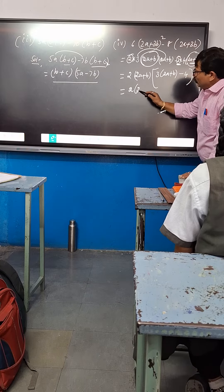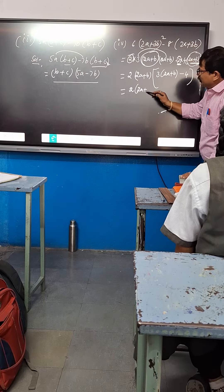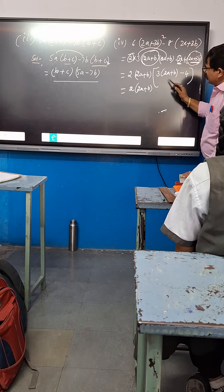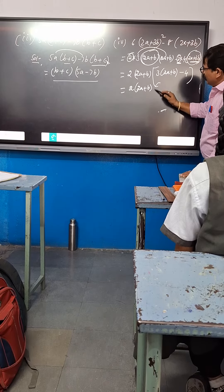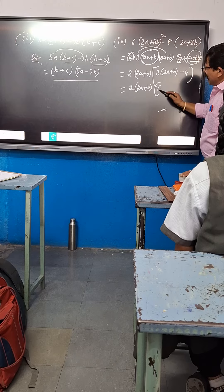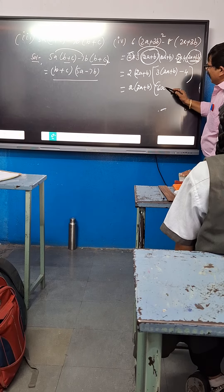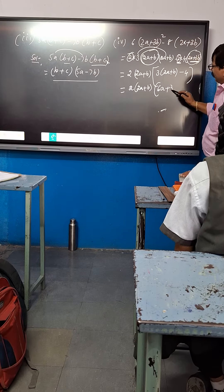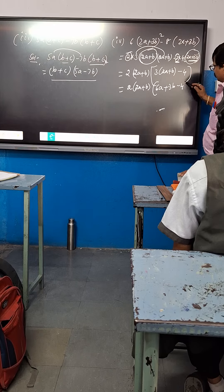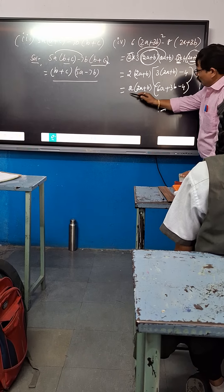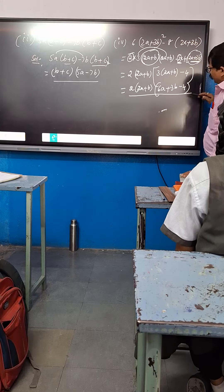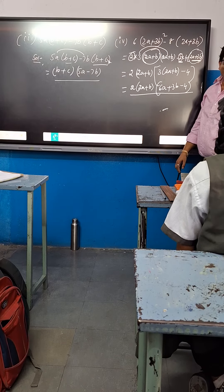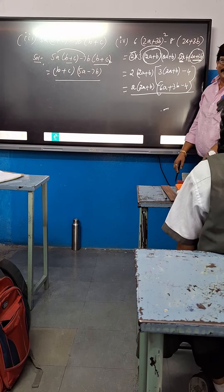2 into 2A plus B, 3B. Next this one: 2 into 3A — 6A, 3B, 3B, minus 4. Fill it out. Easy. Done.